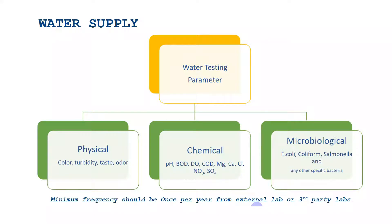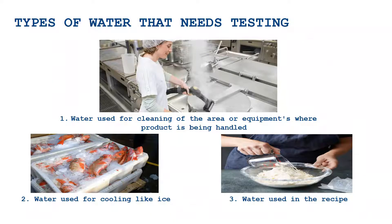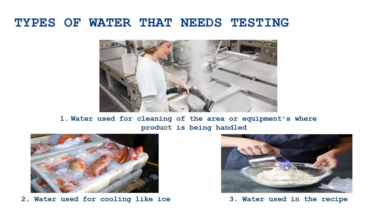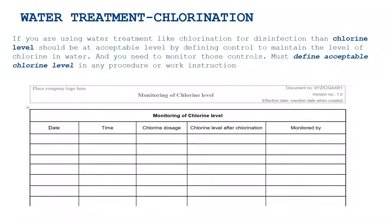The types of water that need testing are: first, water used for cleaning of the area or equipment where the product is being handled; second, water used for cooling, like ice — you need to have testing reports for ice as well; and third, water used as an ingredient in your recipe, like in baking or juice. Sometimes we treat the water using different methods like chlorination, so in such cases you need to monitor the chlorine.